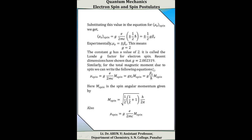Recent measurements have shown the value of g = 2.002319. Similarly, for the total magnetic moment due to spin: mu(spin) = g × (e/2mc) × m(spin) = g × gamma_e × m(spin) = g × beta_e/h-cross × m(spin), where m(spin) = √(1/2 × (1/2 + 1)) × h/(2π). Also, mu(spin) = g × (e/2mc) × m(spin).